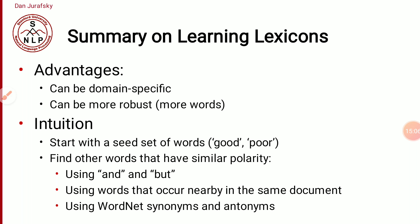In summary, for lexicon learning, the advantages are that you can build domain-specific lexicons tailored to your dataset. The methods include: using conjunction words like 'and' and 'but,' using words that co-occur near each other in a document, and using WordNet synonyms and antonyms. These are the methods for building our own lexicon.